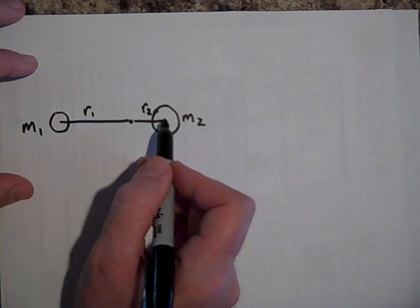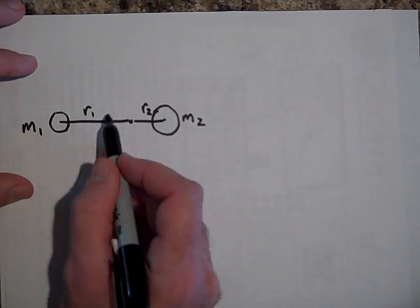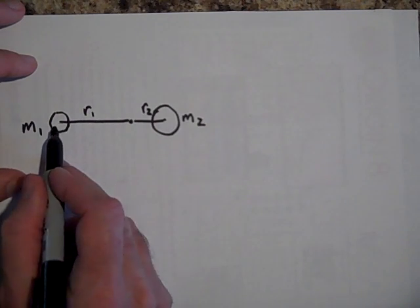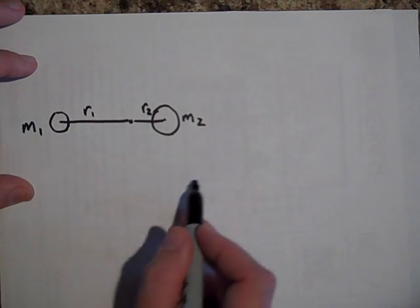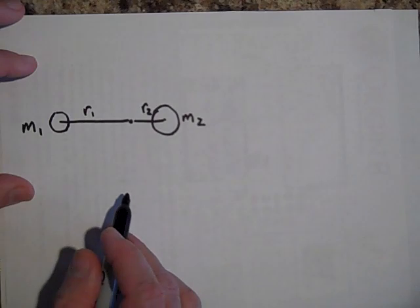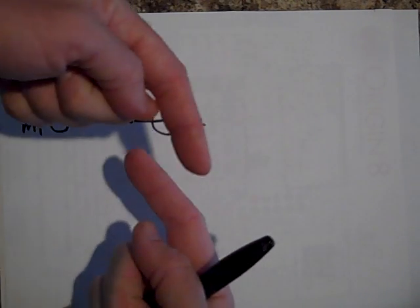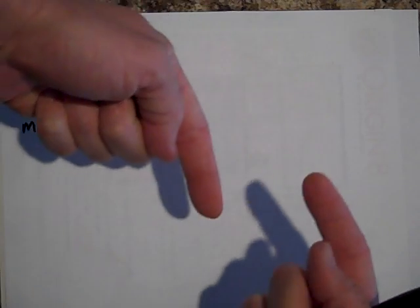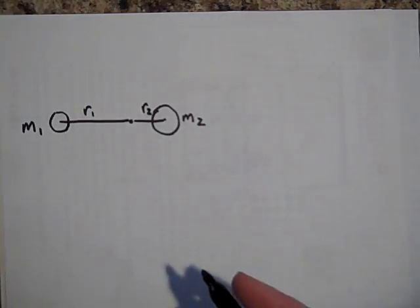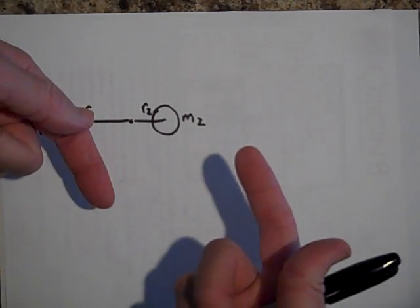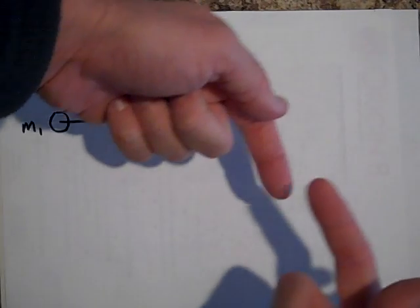It turns out that the period, the time it takes for this to go around once around its center, is exactly the same as it takes this to go around its center. And so that has to be the case. That's why they're always opposite of one another. They have the same period around their center of mass. Otherwise, they have to be at opposite ends. And so that's how they go through space.